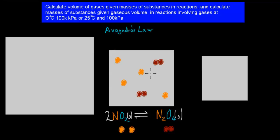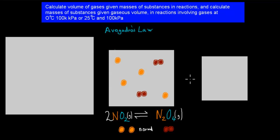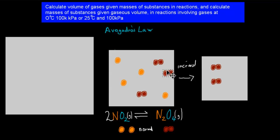We talked about equilibrium and pressure. The example we used: if we have two nitrogen dioxide, they can turn into one di-nitrogen tetroxide. This might be the normal condition — normal pressure. For every two nitrogen dioxide, we have one di-nitrogen tetroxide. But then if we increase the pressure by making the volume smaller, the nitrogen dioxide would turn into di-nitrogen tetroxide.